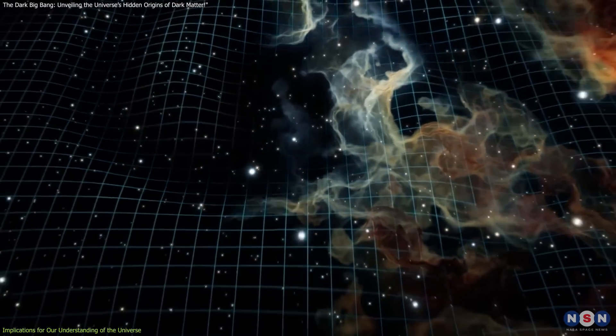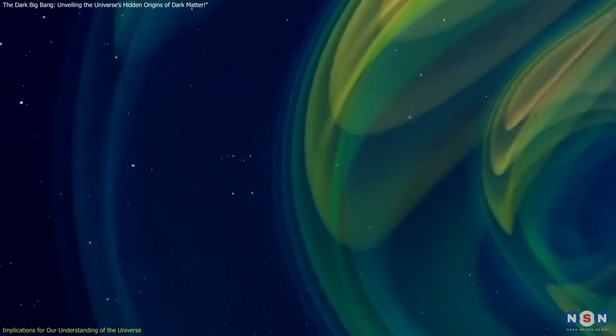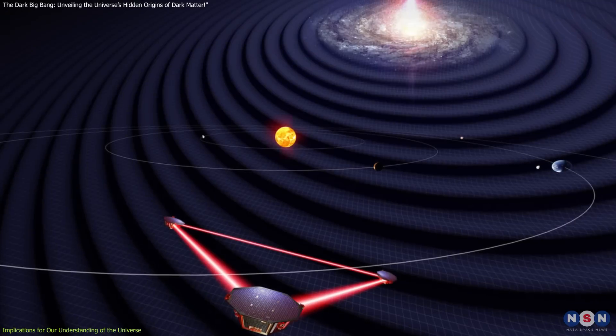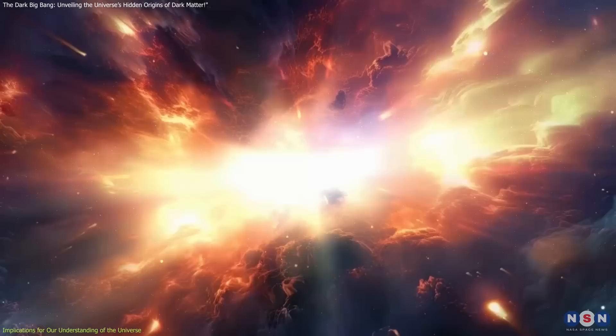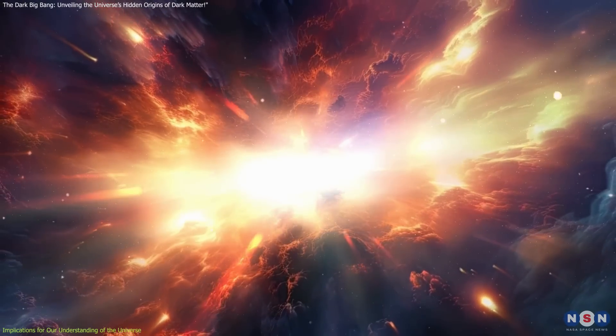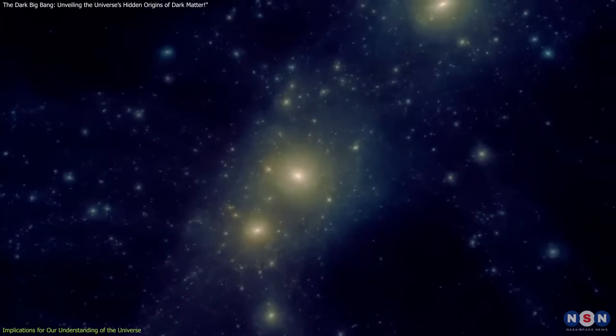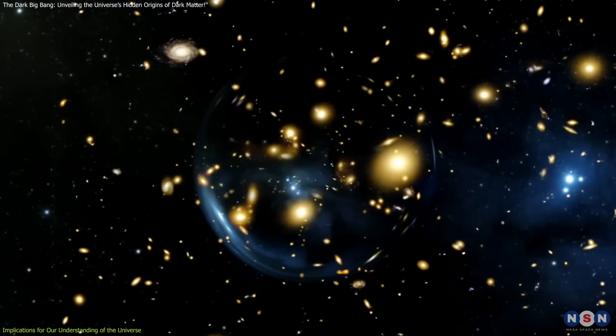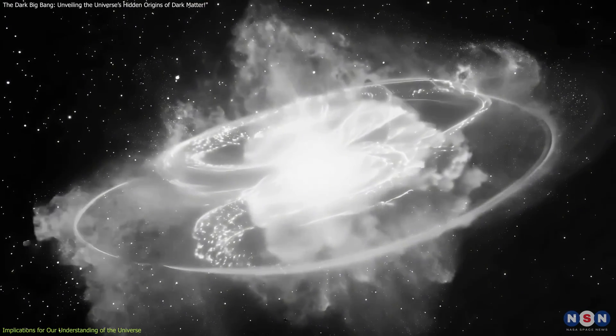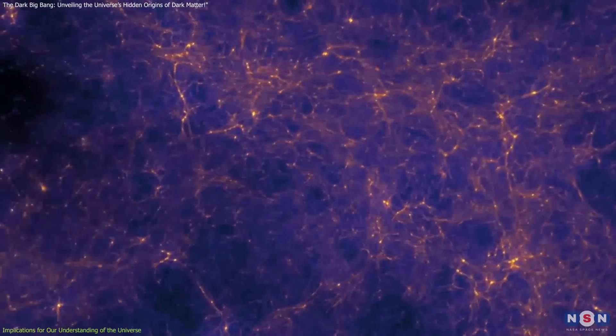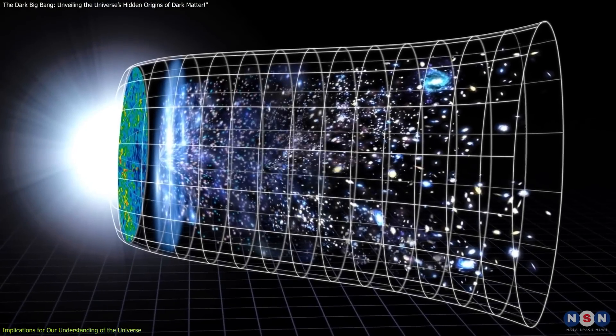Gravitational waves from the Dark Big Bang's first-order phase transition offer another avenue for testing the hypothesis. These waves, carrying unique signatures of the dark sector, could be detected by observatories like LISA and IPTA, providing unprecedented insights into the universe's earliest moments. Gravitational lensing discrepancies in galaxy clusters further support the idea of variations in dark matter's behavior. Lensing data sometimes reveal unexpected distributions of mass, potentially explained if dark matter from the Dark Big Bang includes components that interact more strongly within the dark sector. These interactions could produce clustering patterns or gravitational effects that deviate from the standard model.